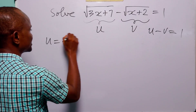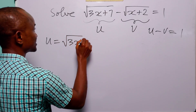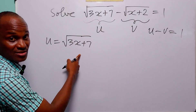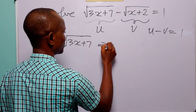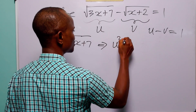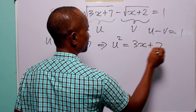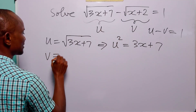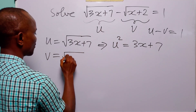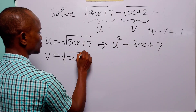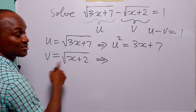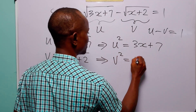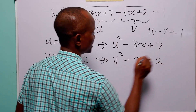We have that u is equal to the square root of 3x plus 7. When we square both sides of this equation, we have that u squared is equal to 3x plus 7. And v is equal to the square root of x plus 2. When we square both sides of that equation, we have that v squared is equal to x plus 2.